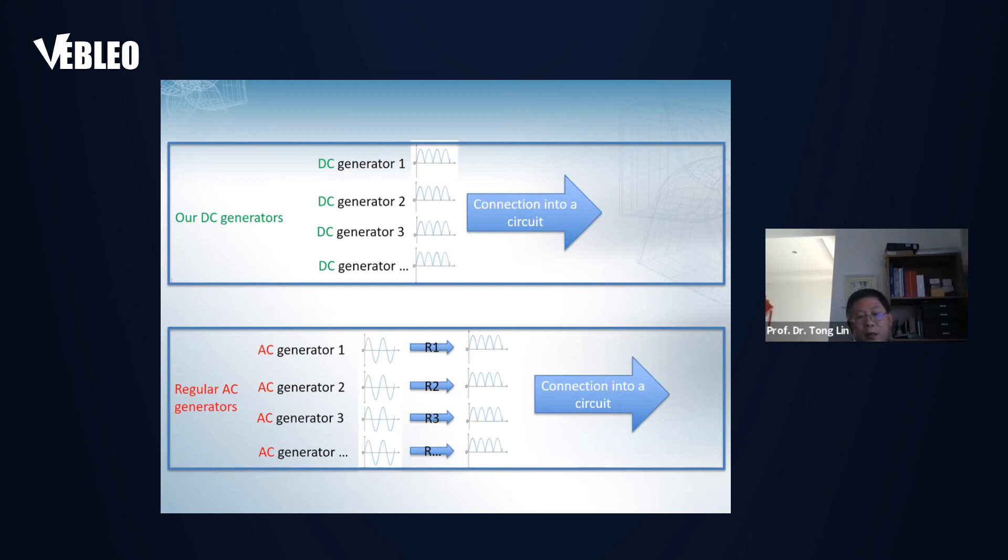However, for the conventional energy generator, because they are generating AC pulse, AC voltage, they cannot link together in such an easy way. Because if they link in this way, some opposite signals may cancel each other. That's reduced energy generation. To link them together, each AC generator has to be linked with a rectifier. That makes the whole device complicated and also costs more energy.